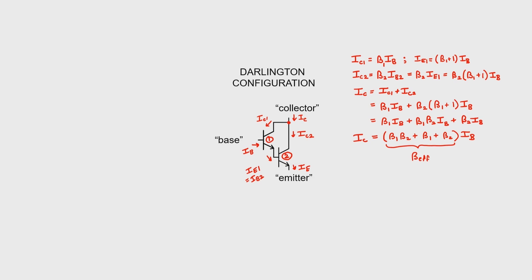Since beta 1 times beta 2 is probably a much larger number than either beta 1 or beta 2 alone, we can approximate our beta effective as beta 1 times beta 2. If the transistors are the same, it's going to be just beta squared.